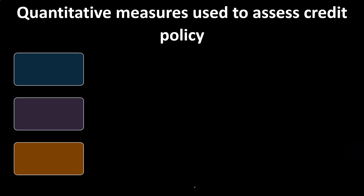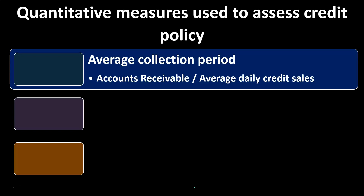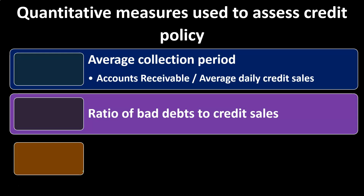There are quantitative measures used to assess the credit policy. The average collection period — calculated as accounts receivable divided by average daily credit sales — tells us how long it takes on average to get paid. The longer it takes to collect, the worse it generally is, because we'd prefer to improve cash flow by getting paid sooner. A longer collection period also increases the likelihood that we won't get paid at all. That said, a longer period might be acceptable if the resulting increase in sales means benefits outweigh the costs.